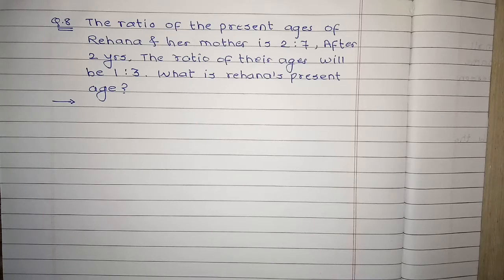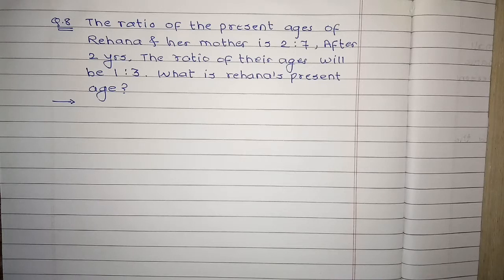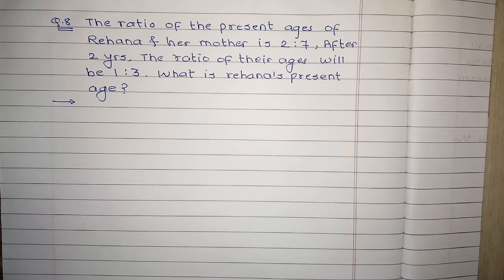यहाँ 56 minus 50 solve करेंगे। अब Question No. 8: रेहाना और उसकी mother का present ages का ratio हमें दिया है जो 2 to 7 है, और दो साल बाद उनके ages का ratio बनता है 1 to 3. हमें रेहाना की present age निकालनी है। यहाँ present ages का ratio दिया है, तो ratio की exact value नहीं होती। रेहाना और उसकी mother के present ages का ratio 2 to 7 है, यह exact value नहीं है।